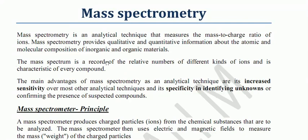A mass spectrum is a record of the relative numbers of different kinds of ions and is characteristic of every compound. The main advantage of mass spectrometry as an analytical technique is increased sensitivity. The specificity in identifying unknowns will confirm the presence of suspected components.